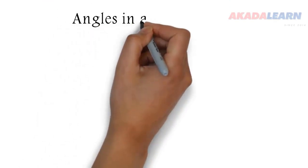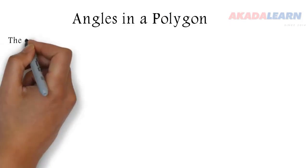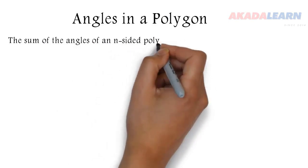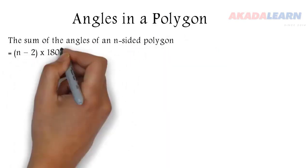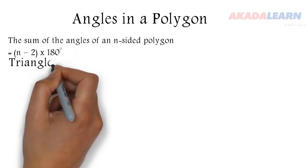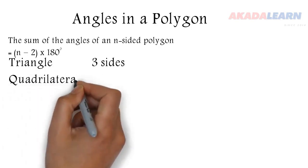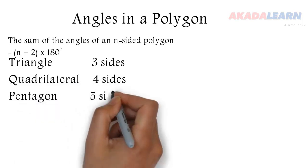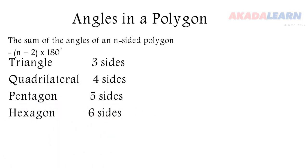So let's look at angles in a polygon. First we start with this very important formula. The sum of the interior angles — the size of an angle — is (N-2) times 180 degrees, where N stands for the number of sides. A triangle has 3 sides, a quadrilateral has 4 sides, a pentagon has 5 sides, a hexagon has 6 sides, and so on and so forth.